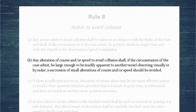The second paragraph: Any alteration of course and/or speed to avoid collision shall, if the circumstances of the case admit, be large enough to be readily apparent to another vessel observing visually or by radar. A succession of small alterations of course and/or speed should be avoided.